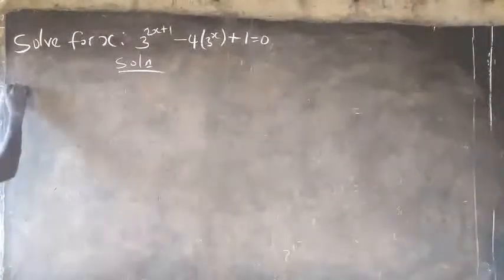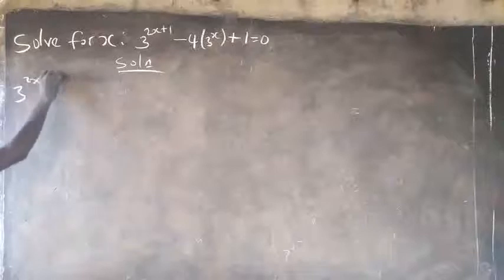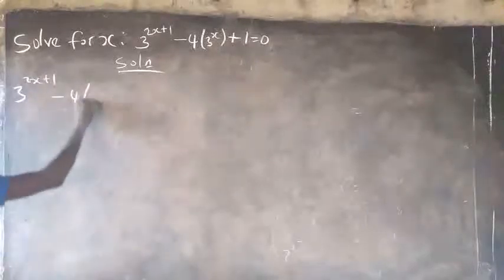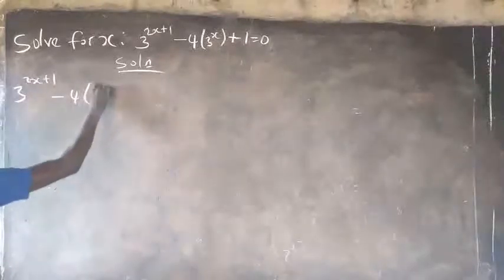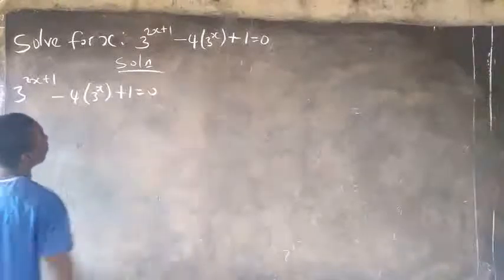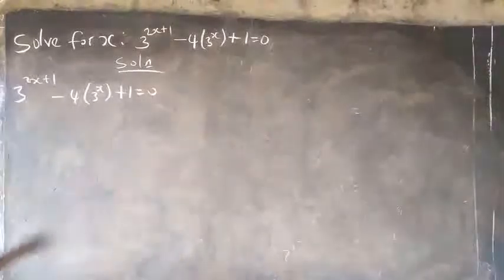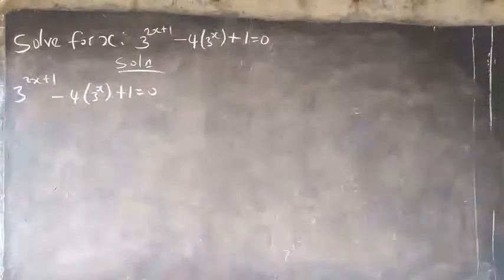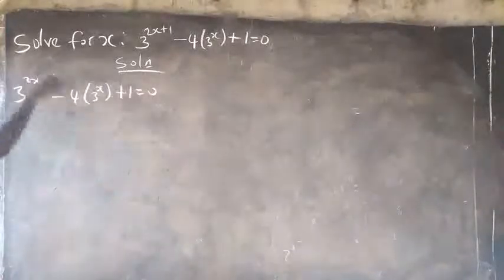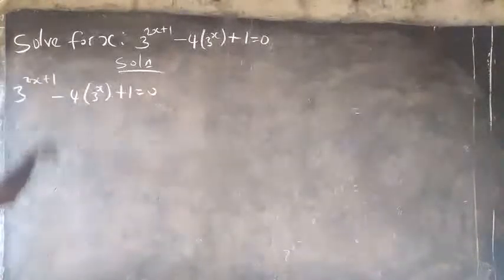So this is the question: 3 to the power of 2s plus 1, minus 4 into 3 to the power of s plus 1, equals 0. Don't forget, in my previous video I've taught us how to break this down, so you have to break it down.